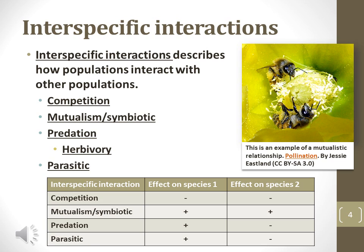Predation helps the predators which consume the prey. Herbivory is an example of predation where the prey is a plant. Parasitic relationships are similar to predation interactions; however, a parasite does not generally kill the host organism.